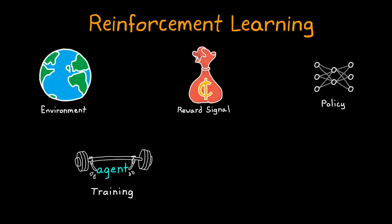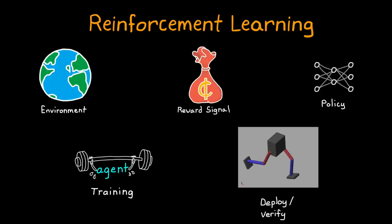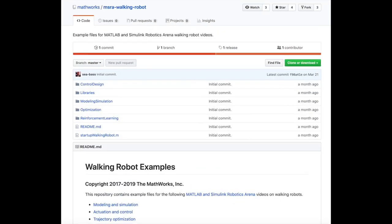Now that we have an understanding of the reinforcement learning workflow, in this video I want to show how that workflow is put to use in getting a bipedal robot to walk using an RL equipped agent. We're going to use the walking robot example from the MATLAB and Simulink Robotics Arena that you can find on GitHub. I've left a link to it in the description.